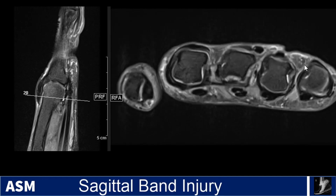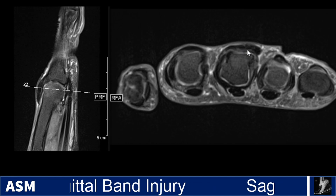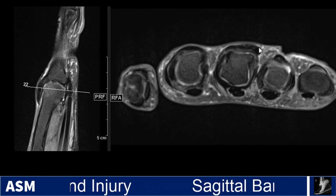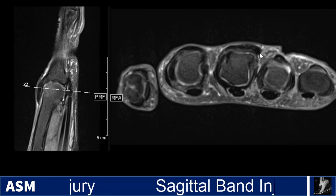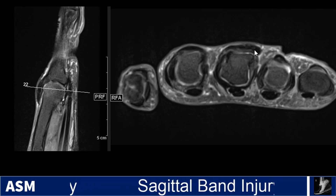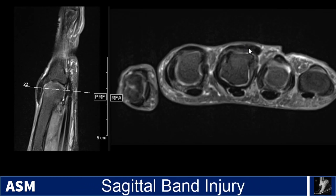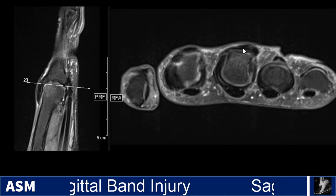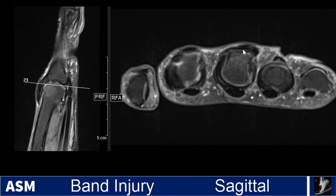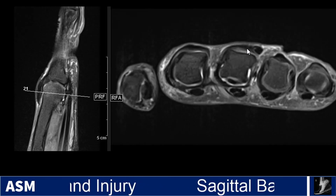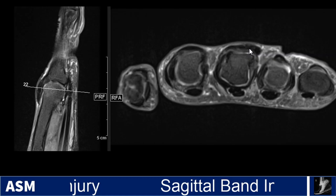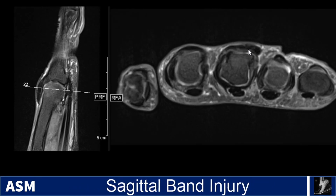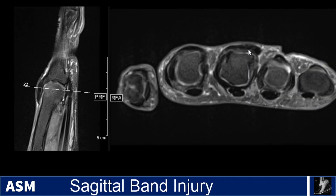Then you come over to the affected digit, the third digit. You can see that even in full extension, this extensor tendon is subluxed from its expected central position. There is marked thickening of the sagittal band, and it becomes considerably attenuated at certain parts as well. So this is already pretty suggestive of a sagittal band injury.